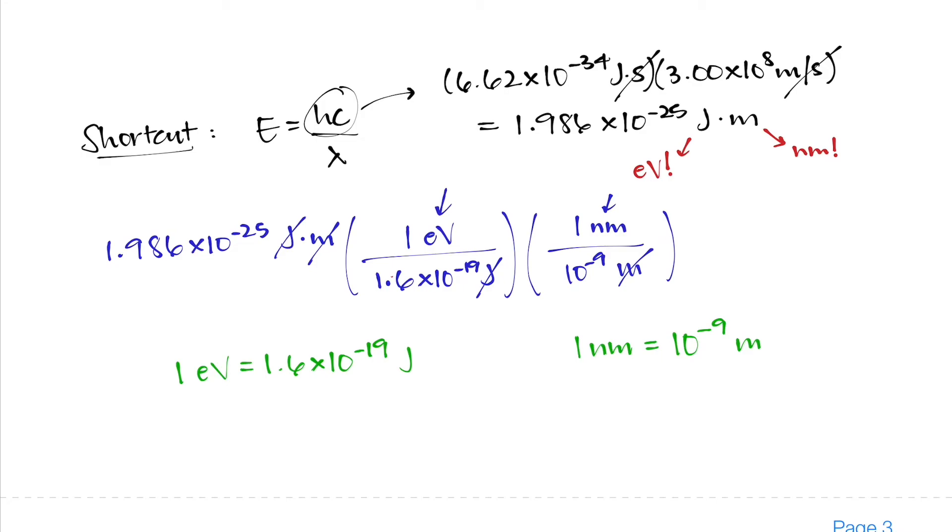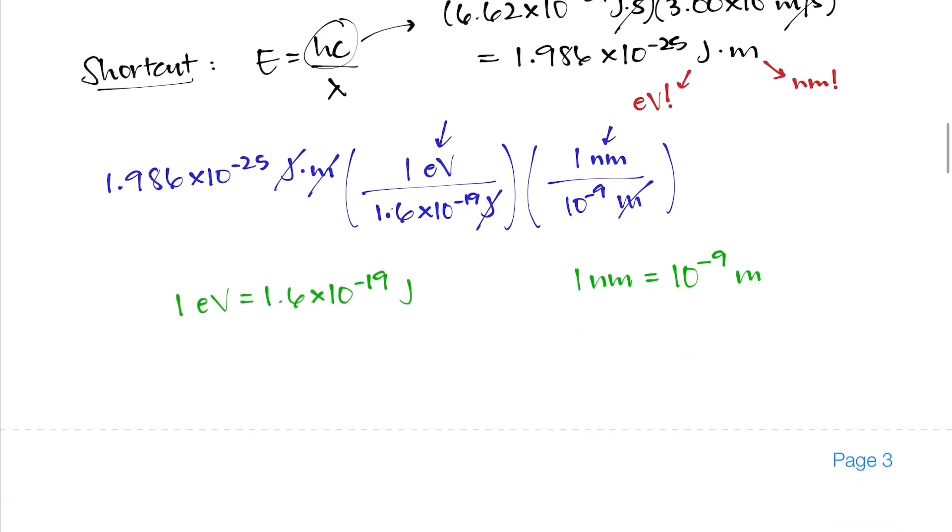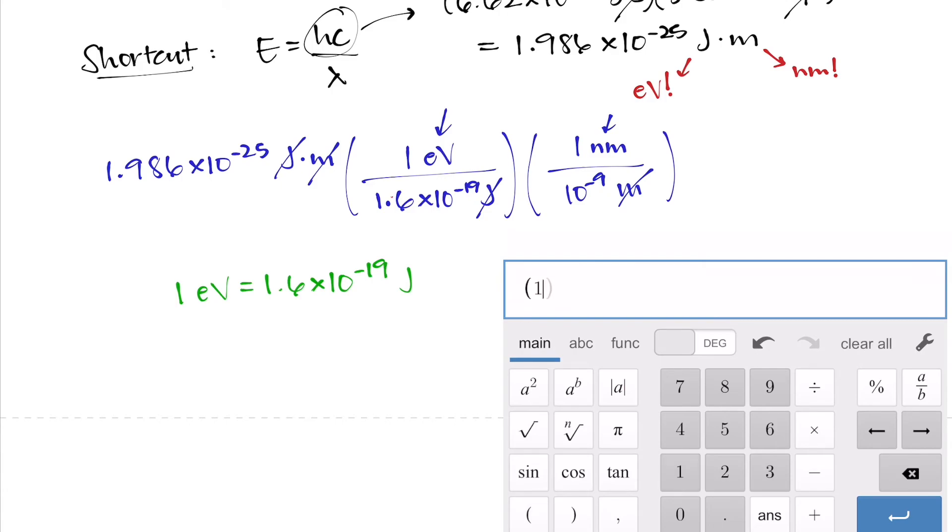So when I multiply out these numbers all together, I'll do 1.986 times 10 to the power of negative 25 divided by 1.6 times 10 to the negative 19. But that number is also being multiplied still in the denominator by 10 to the power of negative 9, so that goes in the denominator as well. And then I'll close the parentheses. And when I press enter, I'll get a number of 1241.25 eV nanometers, which is a lot easier to remember.